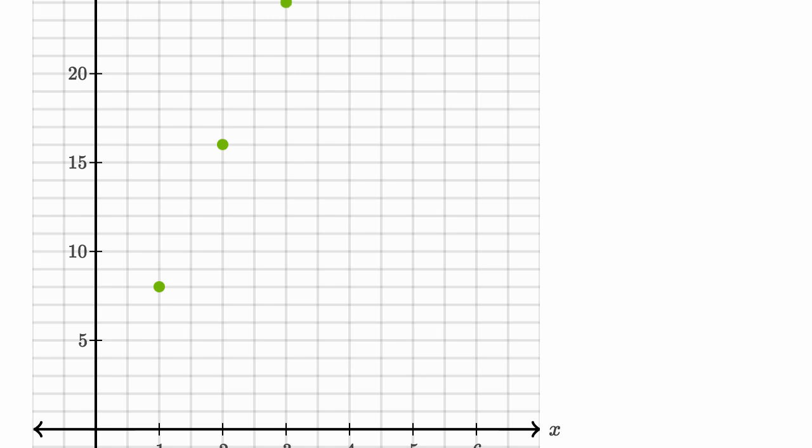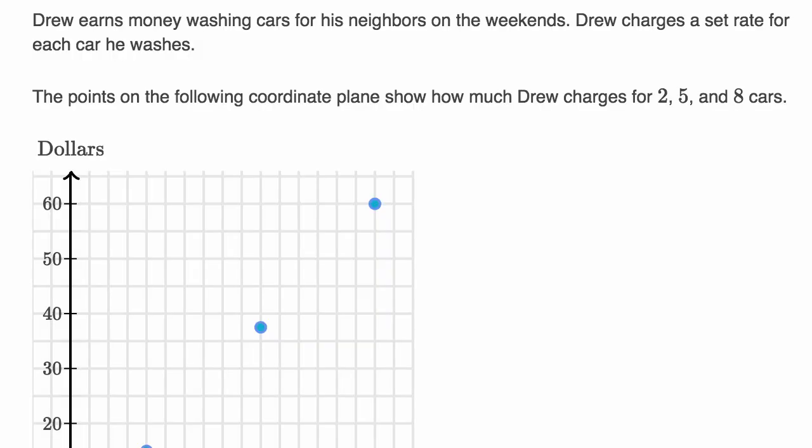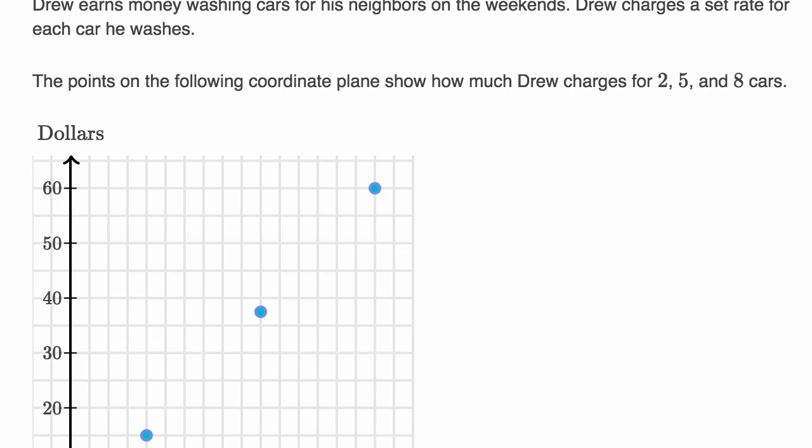Let's do another example. Here we're told Drew earns money washing cars for his neighbors on the weekends. Drew charges a set rate for each car he washes. The points on the following coordinate plane show how much Drew charges for 2, 5, and 8 cars.